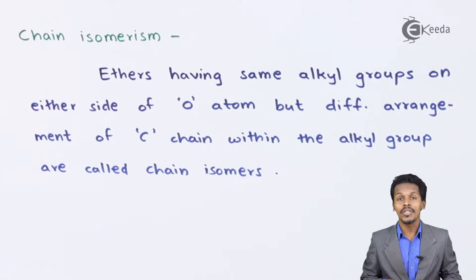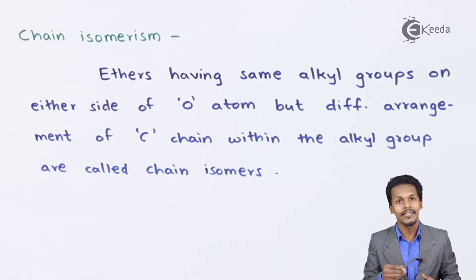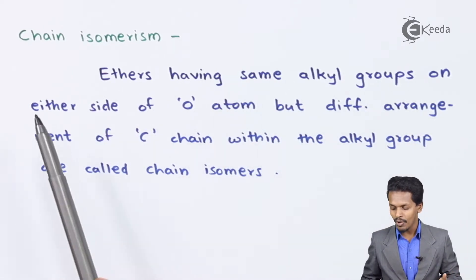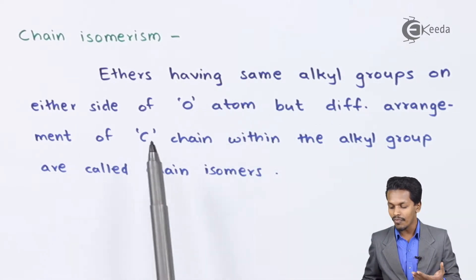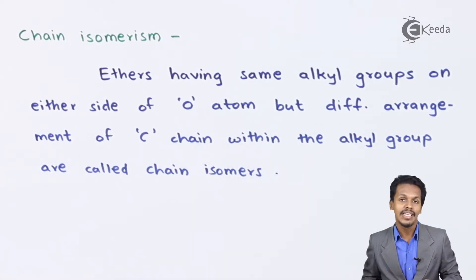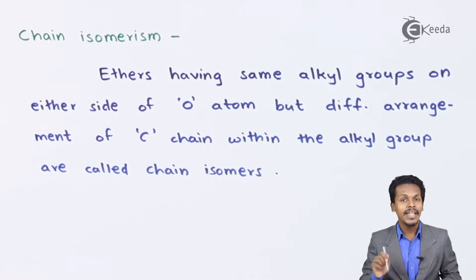Let us talk about the first isomerism, that is chain isomerism. These are compounds having the same alkyl group on either side of the oxygen atom but with a different arrangement of the carbon chain within the alkyl group — these are called chain isomers, and this phenomenon is called chain isomerism.